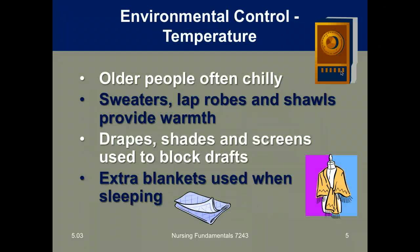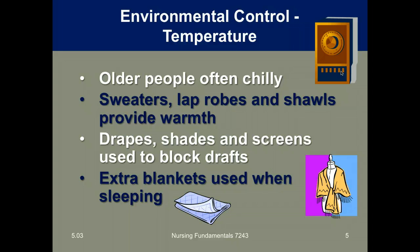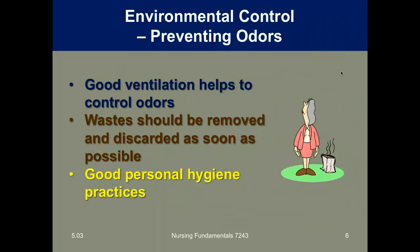When we talk about environmental control, we're referring to temperature. Older people or smaller people are oftentimes very chilly — sweaters, lap robes, and shawls provide warmth. Drapes, shades, and screens are used to block drafts, and extra blankets can be used when someone is cold, though we need to be careful if someone has an elevated temperature. To prevent odors, we need to make sure there's good ventilation.